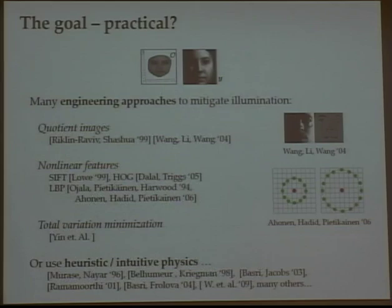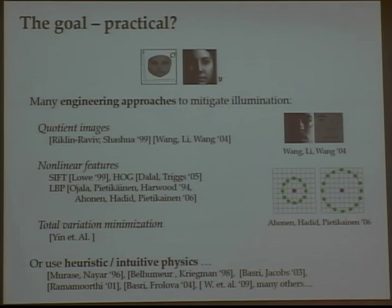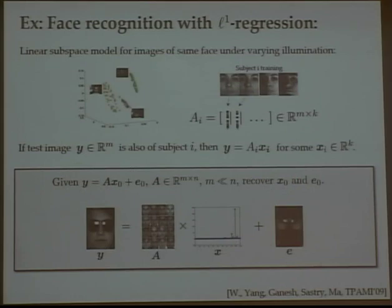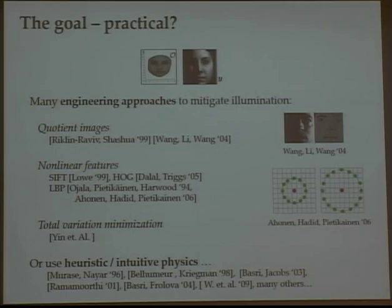For problems where we really need high recognition rates, or potentially where we want guarantees, there's another approach that seems promising: to use the physics of the process that generated the data. This is a very old idea, and it leaves you with representations and algorithms that are actually very simple. Once you cast the problem as one of representing the collection of images you're going to encounter, the recognition or verification problem just becomes one of regression against that set. People make linear models for the set of images under varying illumination, and the optimization problem is just linear regression — the input written as a linear combination of the training database plus some error capturing occlusion.